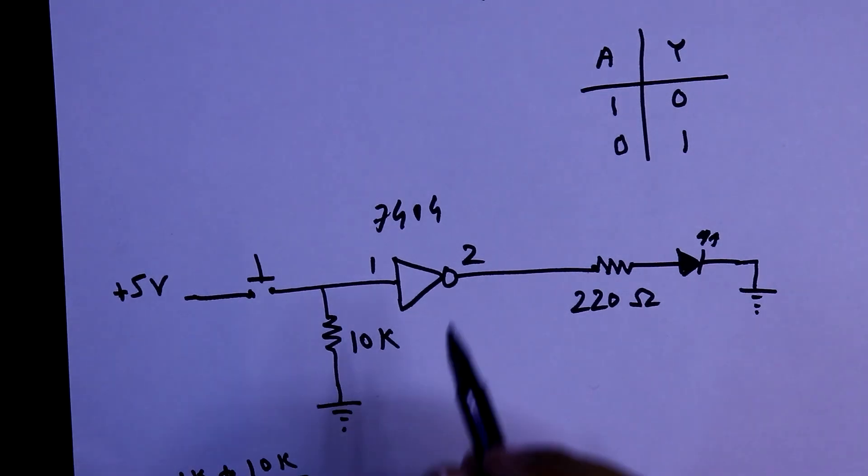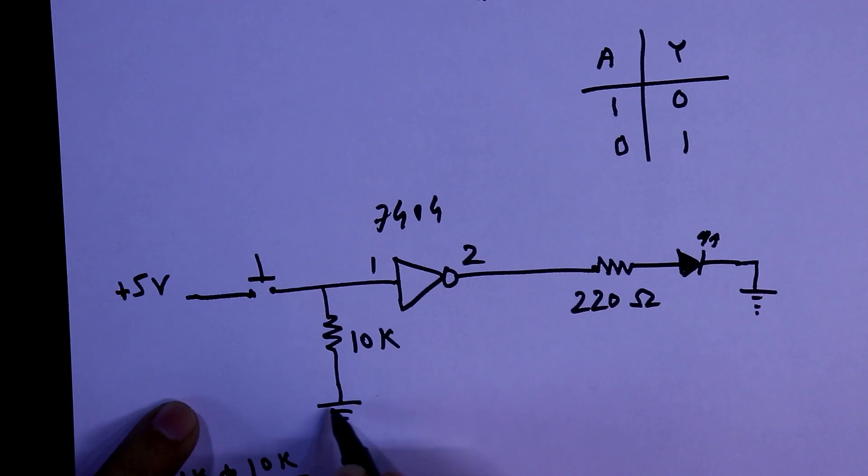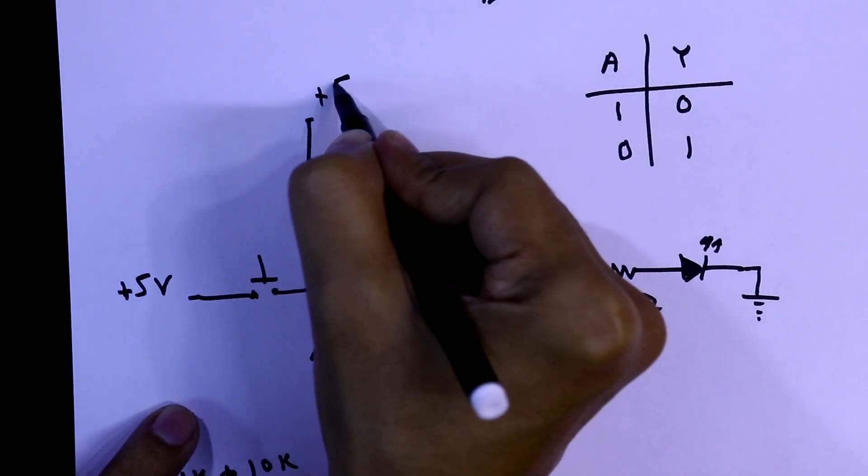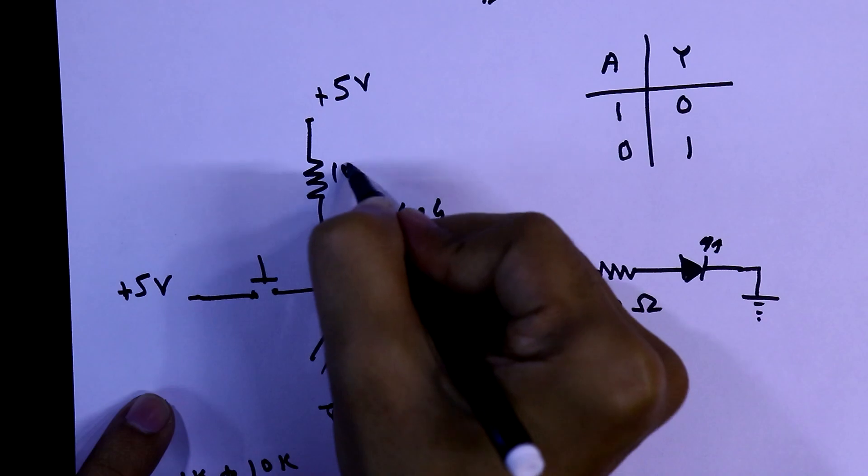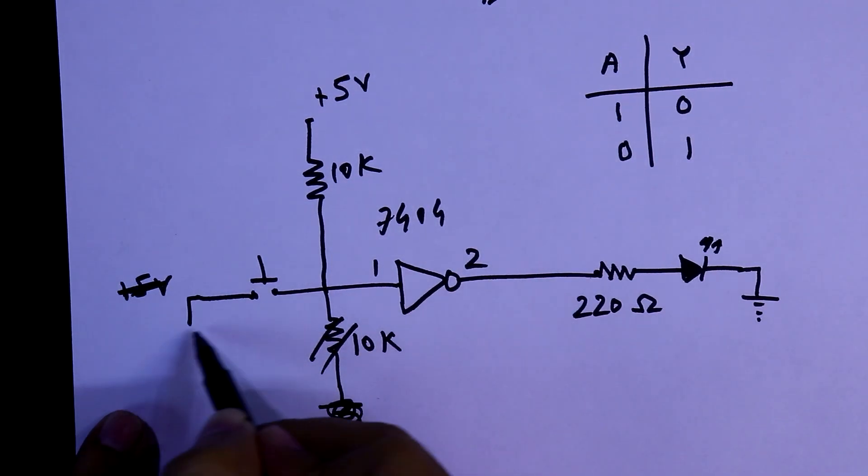Pull-up means this resistor should be connected with plus 5 volt or high signal. And it is connected to ground.